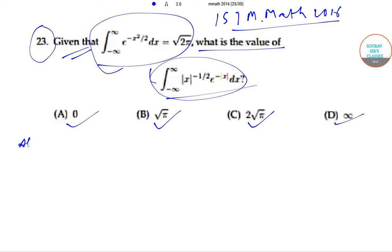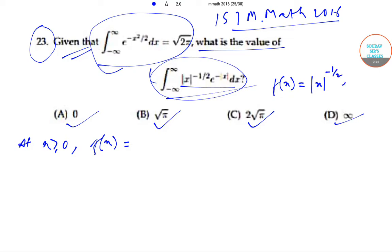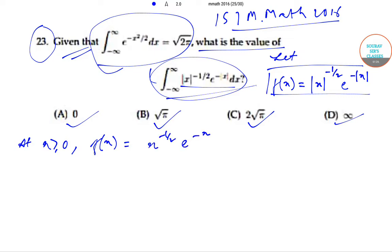We define f(x) as |x| to the power minus 1/2 into e to the power minus |x|. At x greater than or equal to 0, f(x) equals x to the power minus 1/2 into e to the power minus x. Similarly, at x less than 0, f(x) equals |x| to the power minus 1/2 into e to the power x.